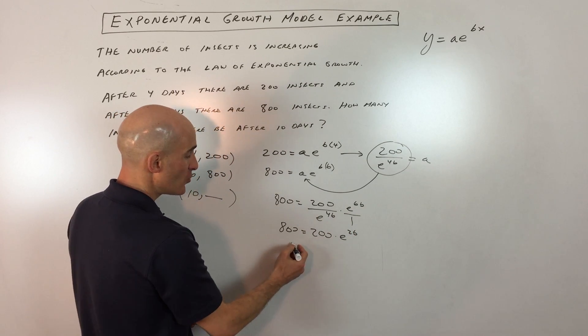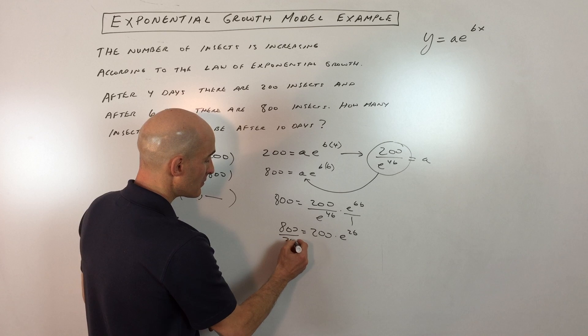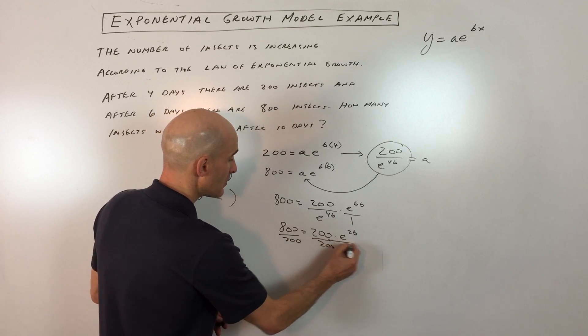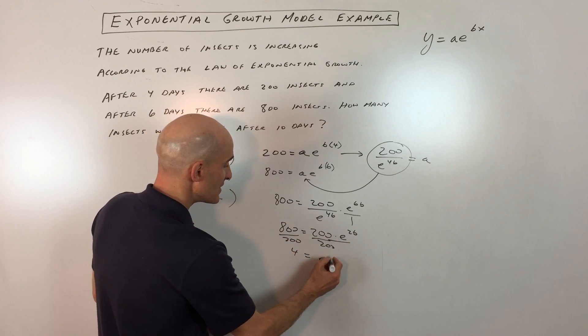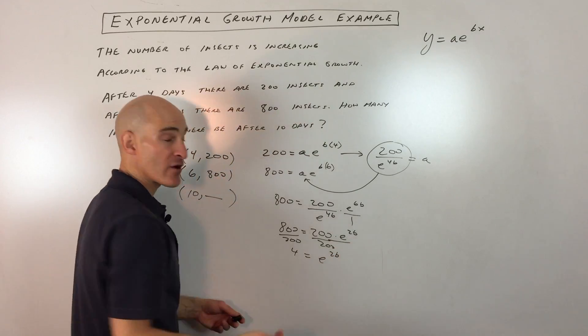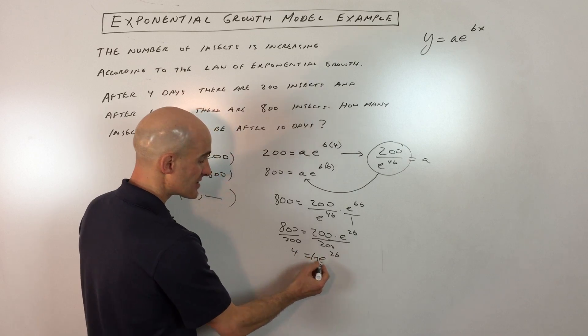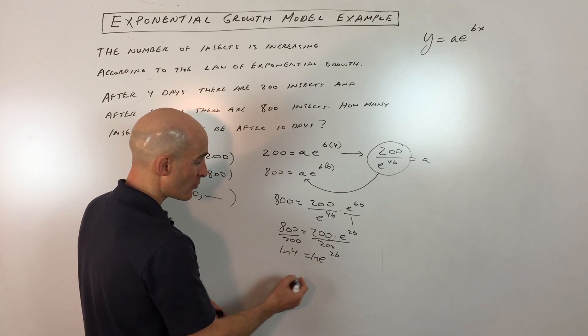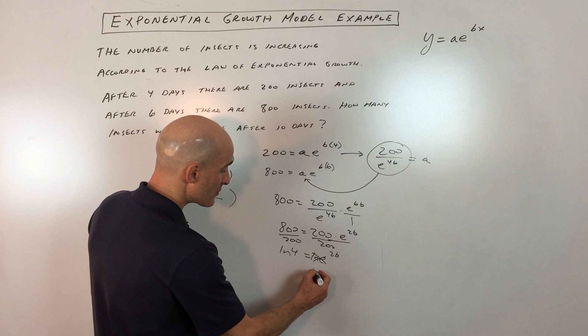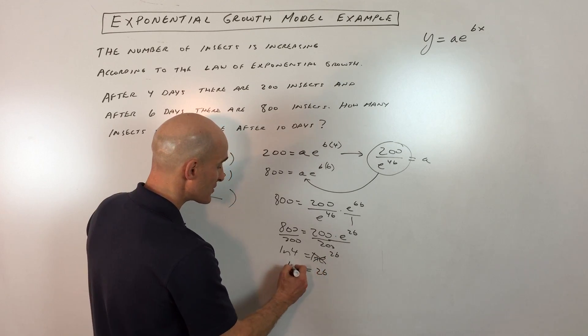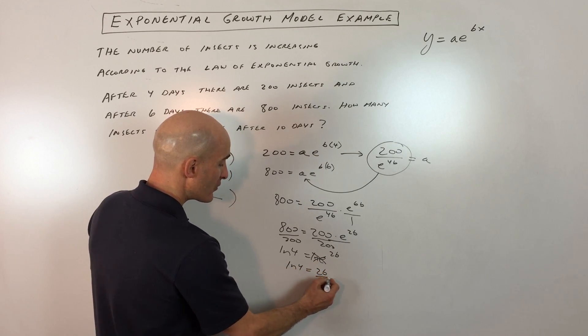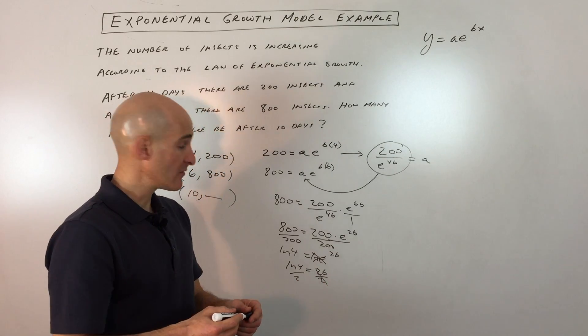Divide both sides by 200, and we get 4 equals e to the 2b. Because our variable is in the exponent position, we're going to take the natural log of both sides. These are inverses of one another, so they cancel out. We get 2b equals natural log of 4. Divide both sides by 2, and we get b equals natural log of 4 divided by 2.